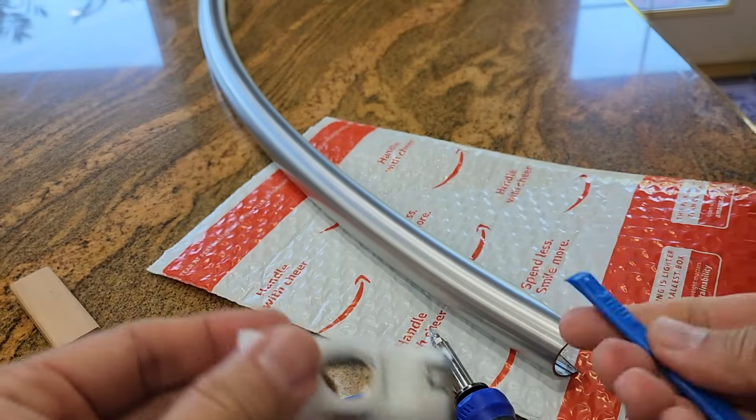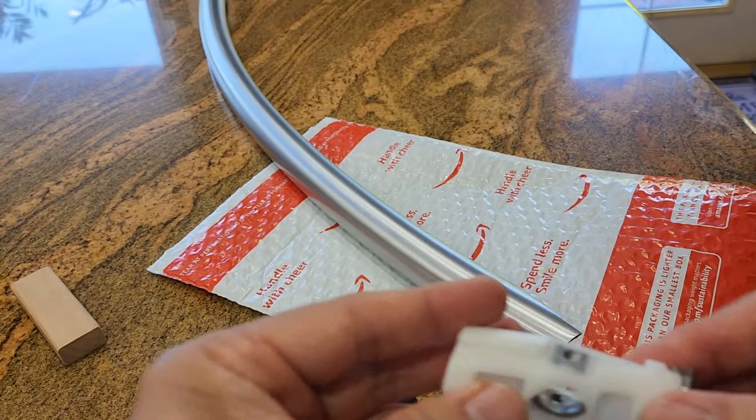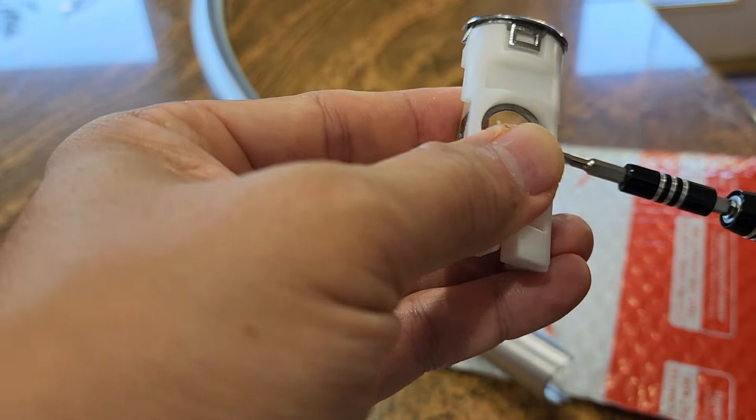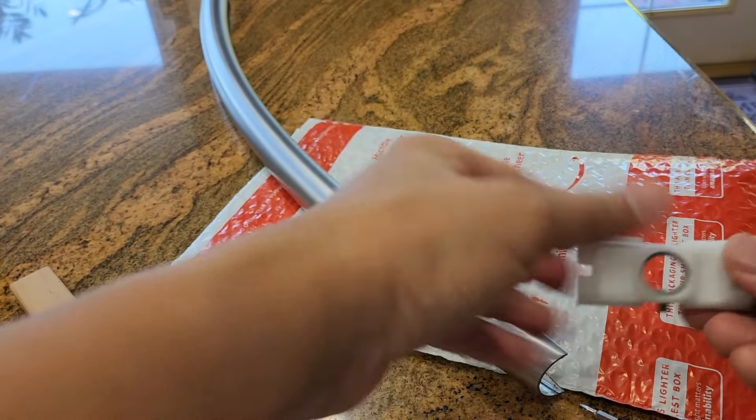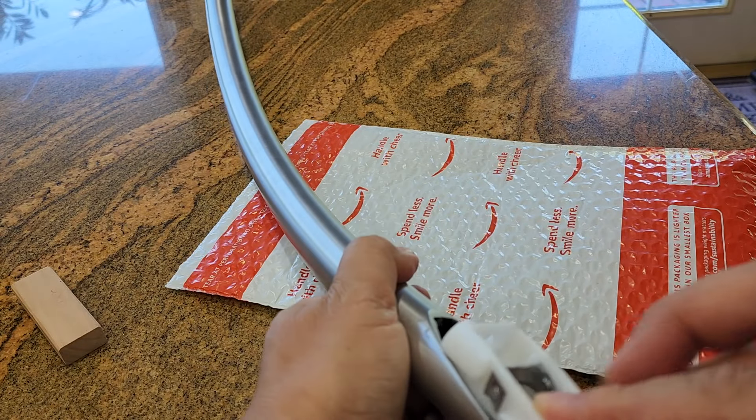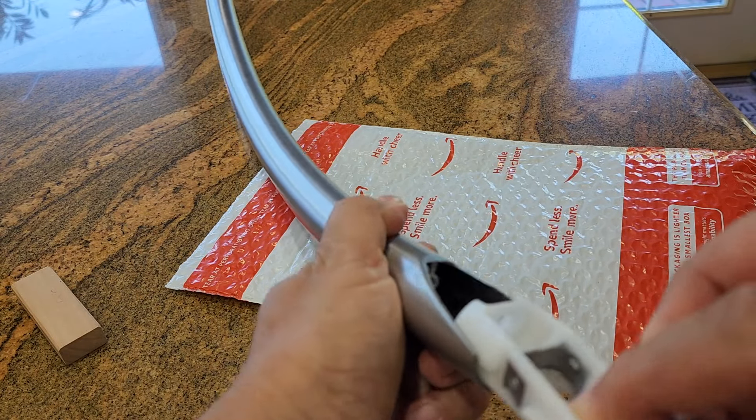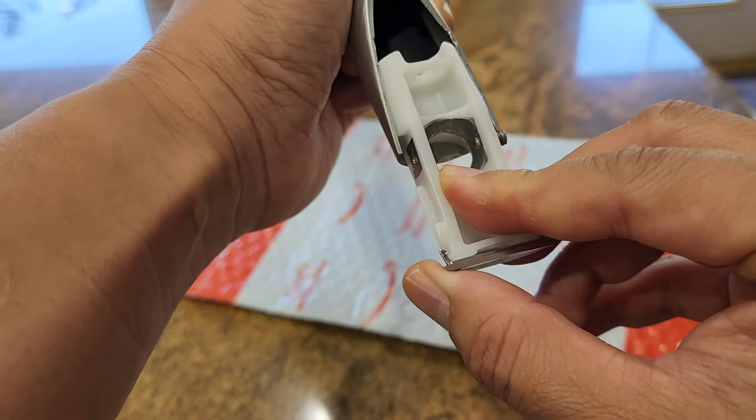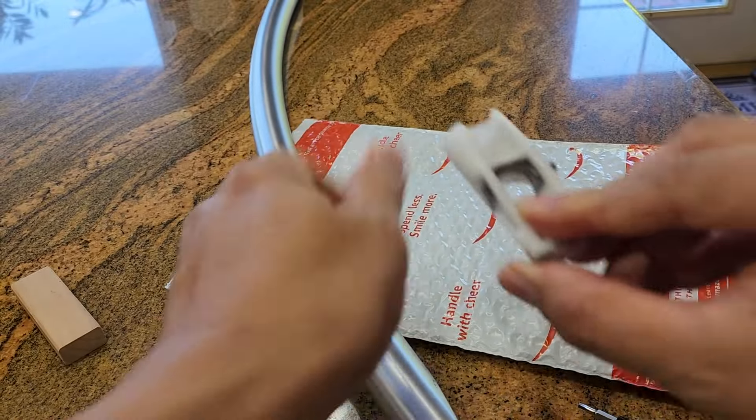It already has a set screw. So now, I just have to basically insert the set screw. Okay, nice. So to get it in here though, you got to put the set screw all the way in, and then back it out. Sorry for that noise.